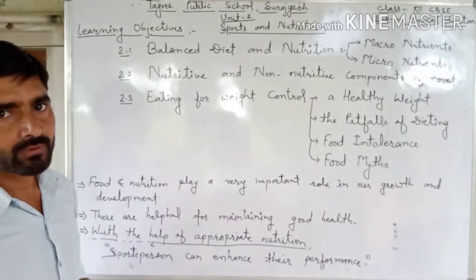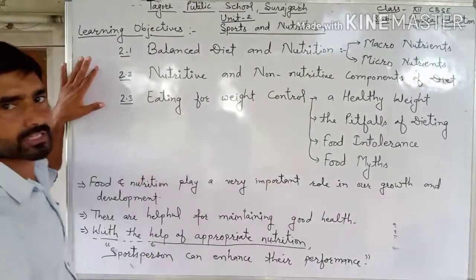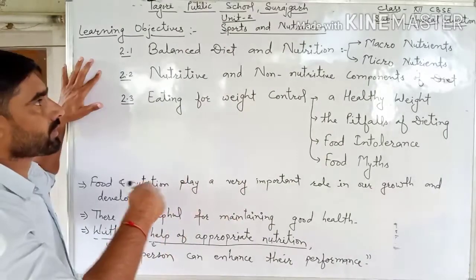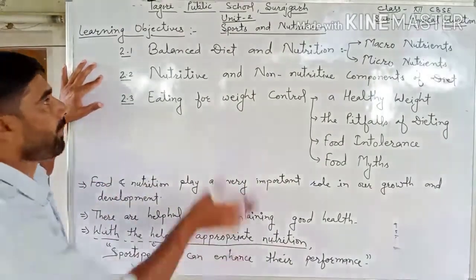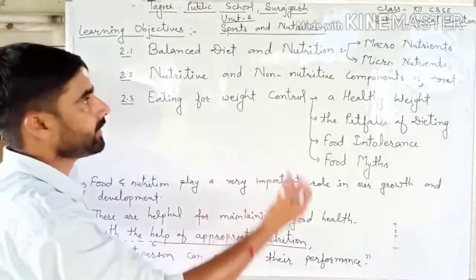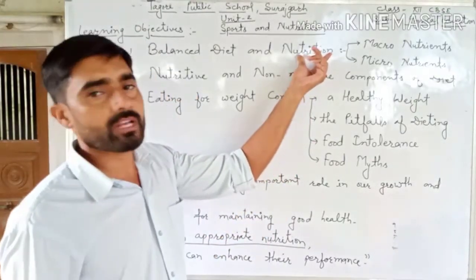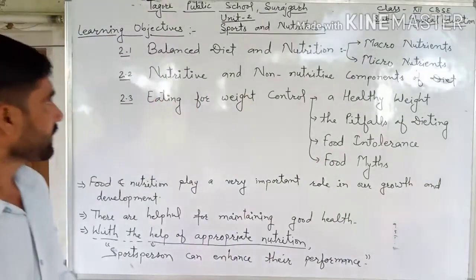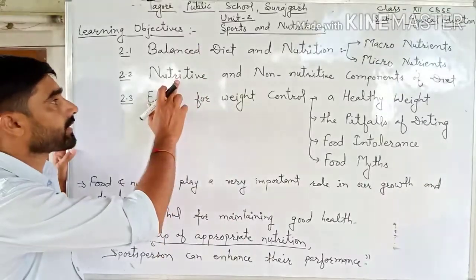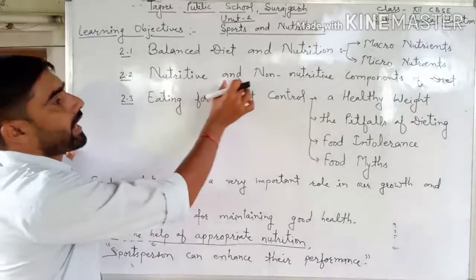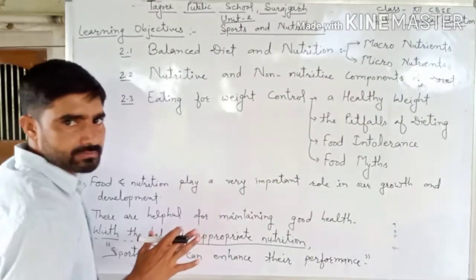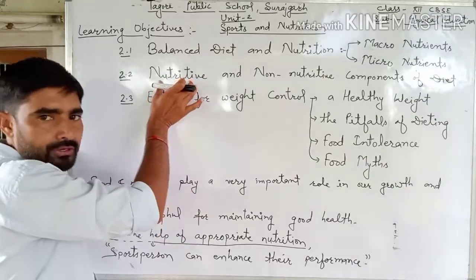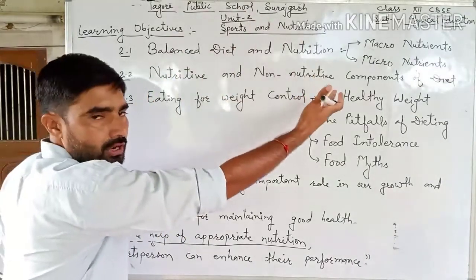In this chapter we will discuss the following learning objectives. First learning objective: balanced diet and nutrition. In this learning objective we will discuss about balanced diet, what do you mean by balanced diet, and what do you mean by nutrition, macronutrients and micronutrients. Second learning objective: nutritive and non-nutritive components of diet. We will discuss the nutritive components of diet and non-nutritive components of diet.